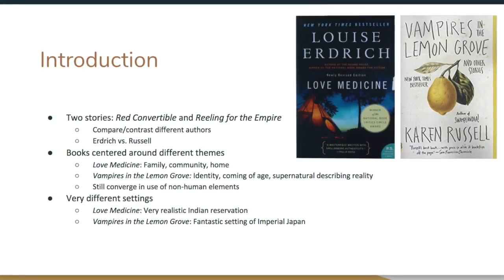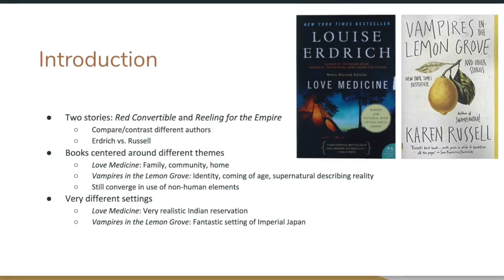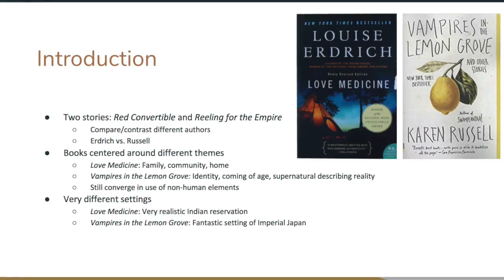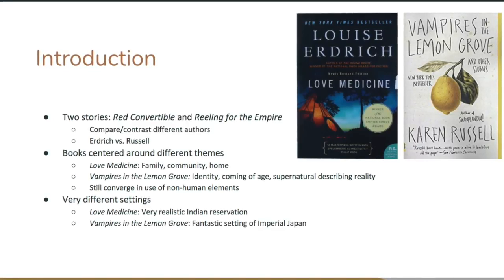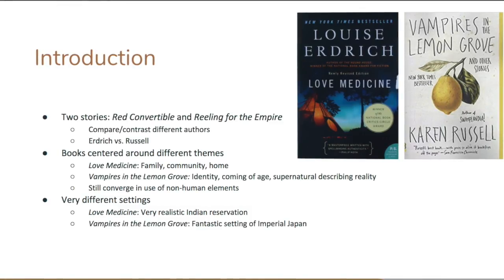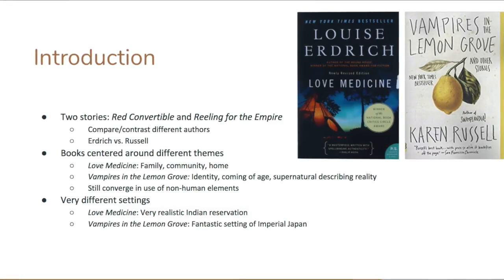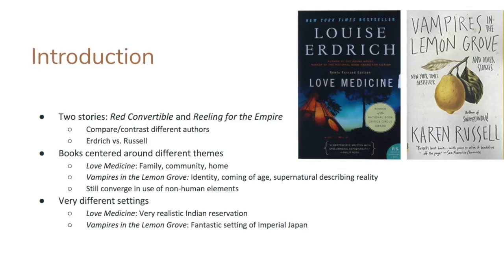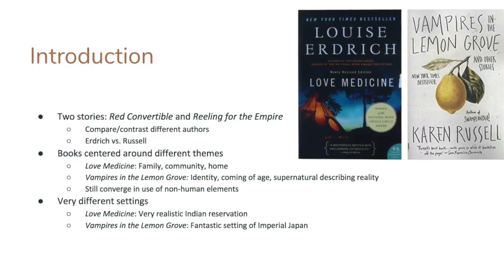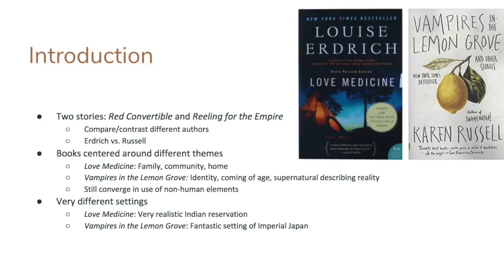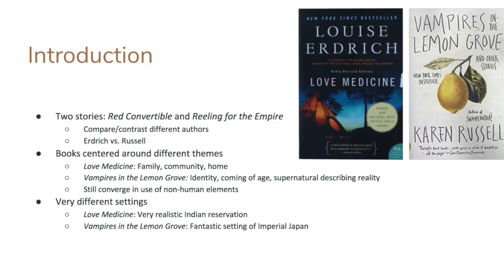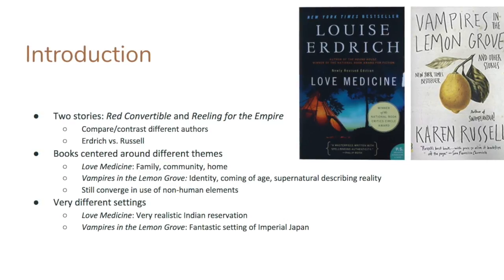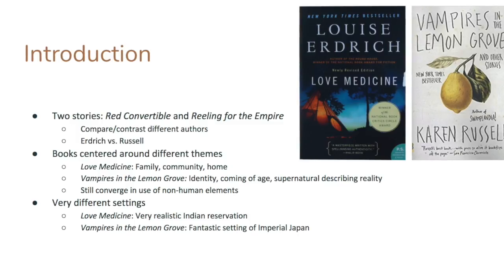Another really important thing to understand is that these books are centered around different themes. In Love Medicine and The Red Convertible, we see ideas such as family, community, and home. Whereas in Vampires in the Lemon Grove — and more specifically Reeling for the Empire — we see themes such as identity and coming of age. We often see Karen Russell using the supernatural to describe the reality we face, but we still see some level of convergence in the use of non-human elements despite these differences, which is really interesting.